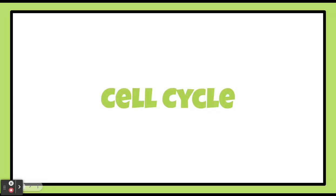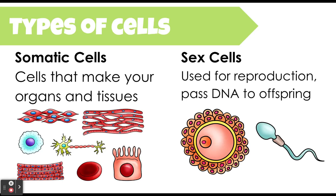Hey everyone, in this video we are going to be covering the cell cycle. Before we can talk about what the cell cycle is, we need to understand the different types of cells in organisms. We have two groups of cells in living things: somatic cells and sex cells. Each group of cells will perform different types of division to make more of themselves. What we're going to be talking about with the cell cycle today applies specifically to somatic cells.